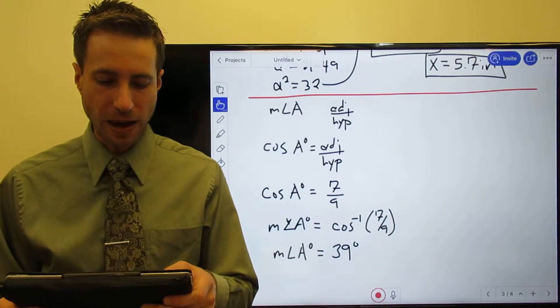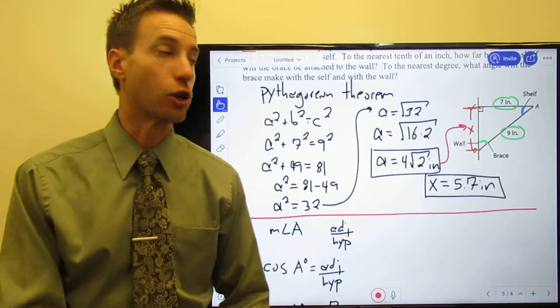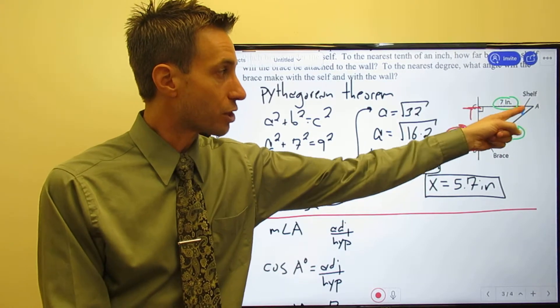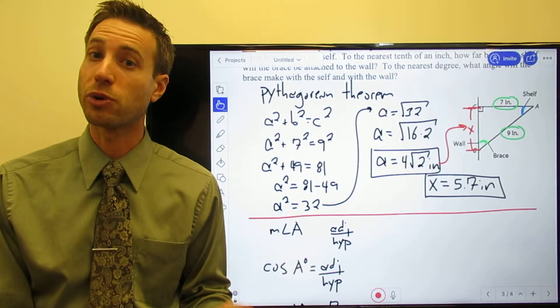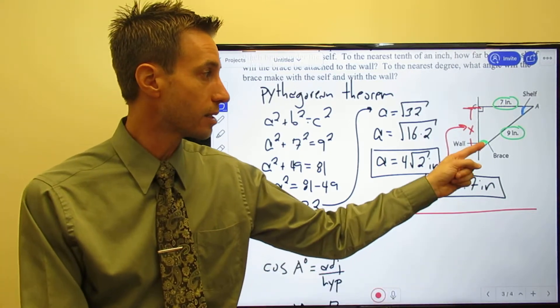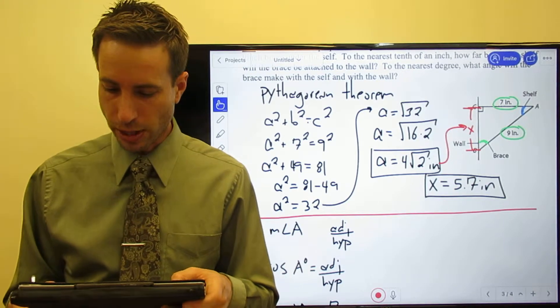Now you got a couple of options, because remember I did ask you to find the measure of angle B. You certainly could - this is 90, we just found this is 39 - you could do the triangle sum theorem, because all 3 angles must sum to 180 degrees, to find the measure of angle B. But since I like doing trig, let's do trig.